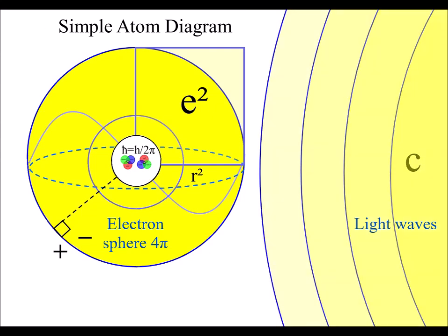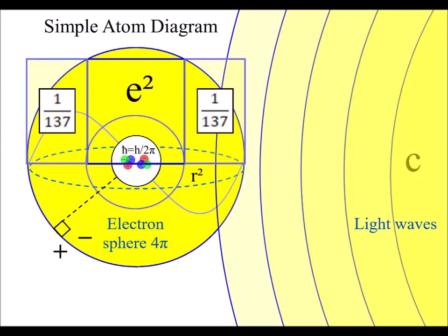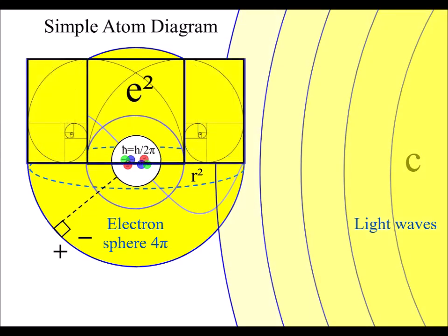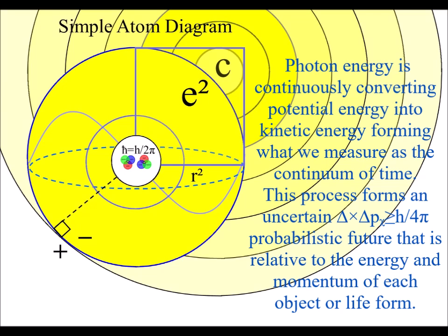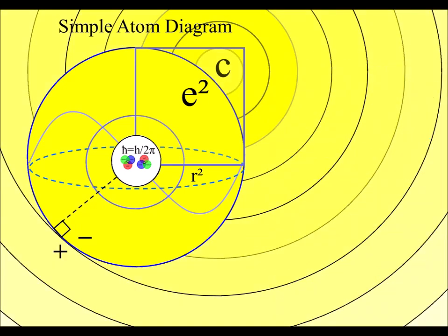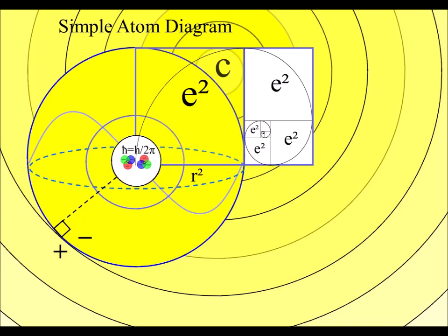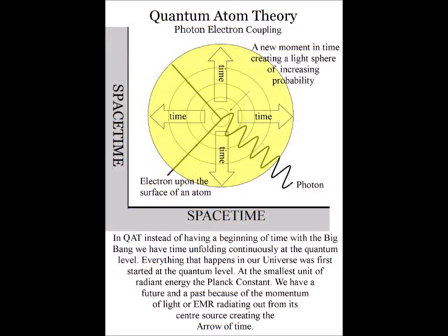Whenever our three-dimensional world changes, there is an exchange of photon energy with the absorption and emission of light. This is called a photon-electron coupling or dipole moment and it is relative to the light photon and the spherical electron probability cloud of an atom.